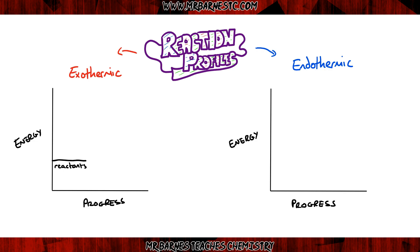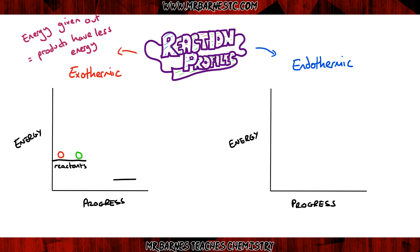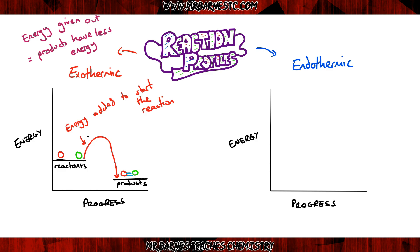Starting with exothermic reactions — you should remember that exothermic means energy is given out to the surroundings. What that means is the products themselves will have less energy, so when you draw your graph the products will be lower on the energy axis. You also have to start the reaction off by adding energy, which is the activation energy, labelled on the graph.